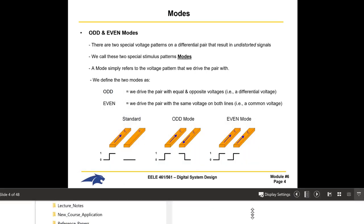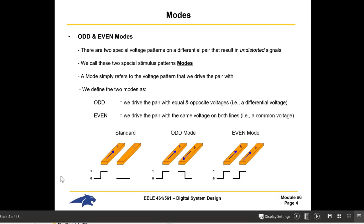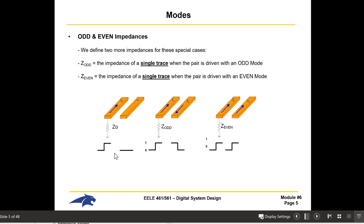When you have coupled lines, there are different impedances. We're talking about the impedance of a line and the effect of its neighbor. If the neighbor is held at zero and you launch a wave down, the impedance — V over I — is simply Z-naught, the characteristic impedance. The definition is that everyone else in the system is held at ground or return.